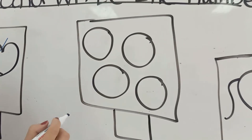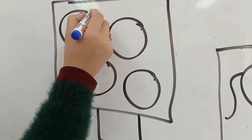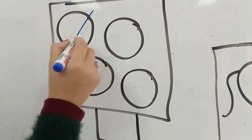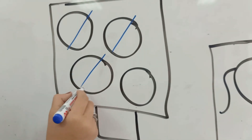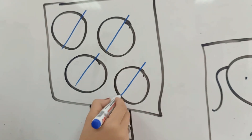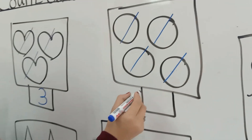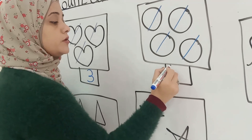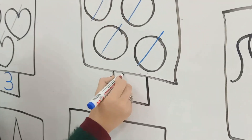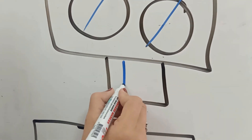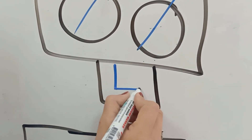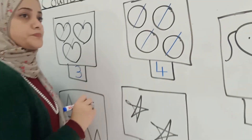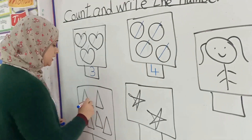How many circles here? Let's count: one, two, three, four. Excellent. How do we write the number four? Starting point, down stick, down stick again. Here.